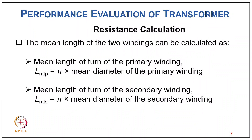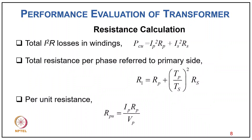The mean turn length of the primary winding LMTp equals pi times the mean turn diameter of the primary winding, and similarly LMTs equals pi times the mean turn diameter of the secondary winding. The total I²R copper losses in the windings is PCU equal to Ip²×Rp plus Is²×Rs.